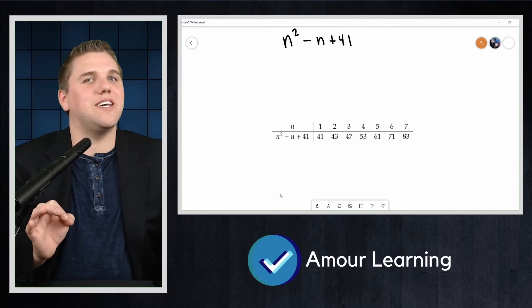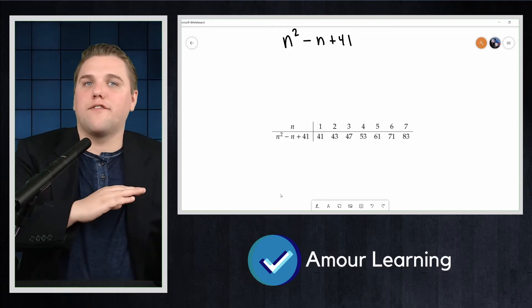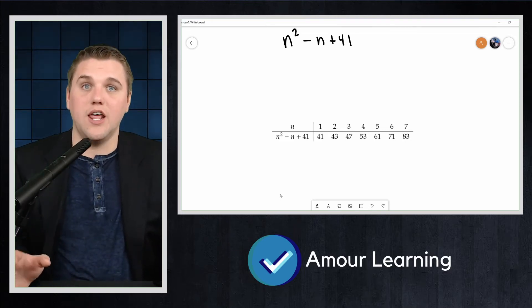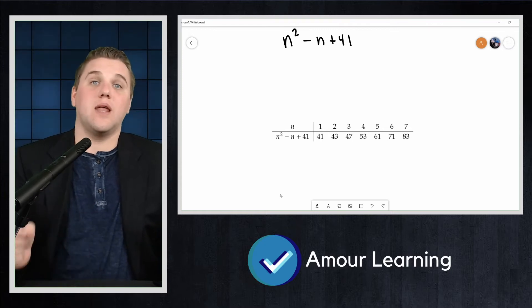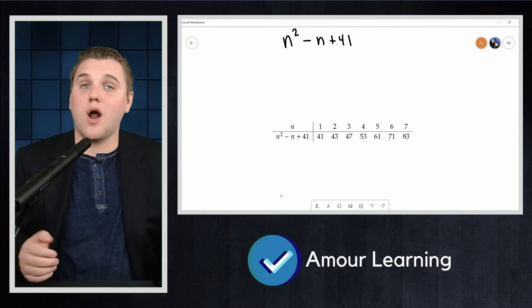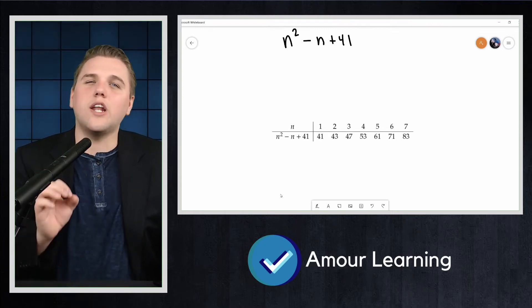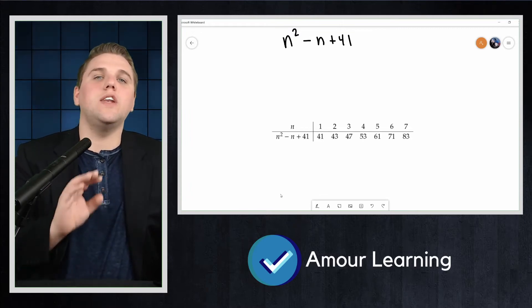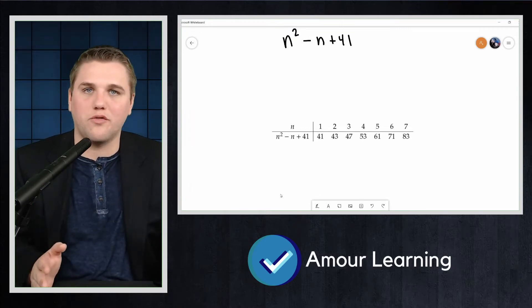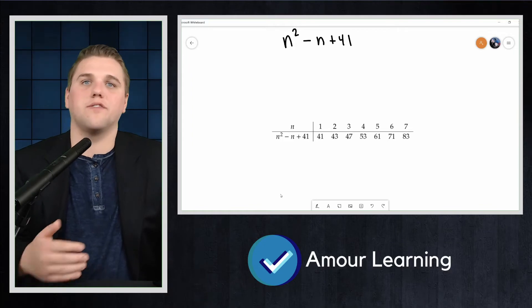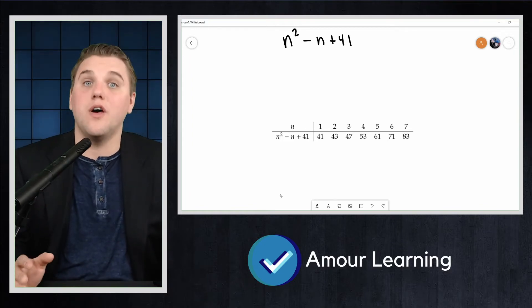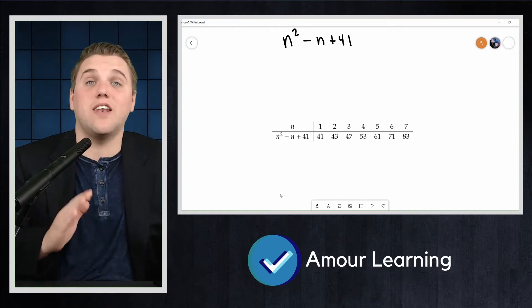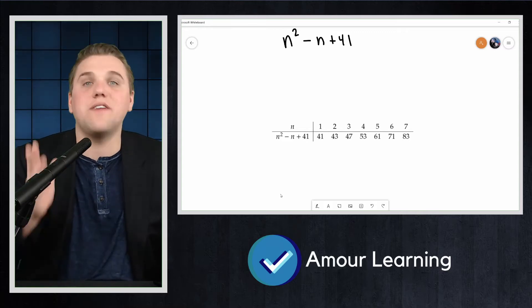You might be tempted to conjecture for all positive integers n, the number n squared minus n plus 41 is prime. If you wanted to prove this, you would need to use a direct proof, a proof by contrapositive, or another style of proof, but certainly it is not enough to give even 7 examples.